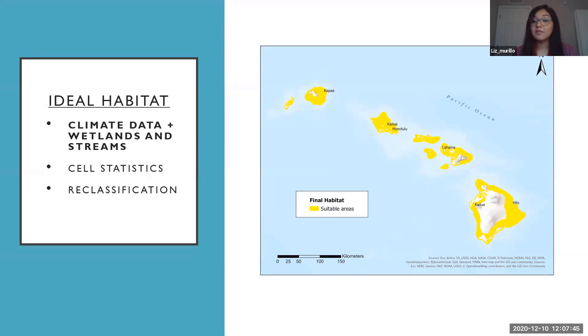Once I combined all of my final data sets, the climate data which had all three rasters and then the wetlands and streams data with the February minimum temperatures, I built basically this ideal habitat for mosquitoes to survive. And across the Hawaiian Islands, here we have all the areas in yellow that are suitable for mosquito survival.